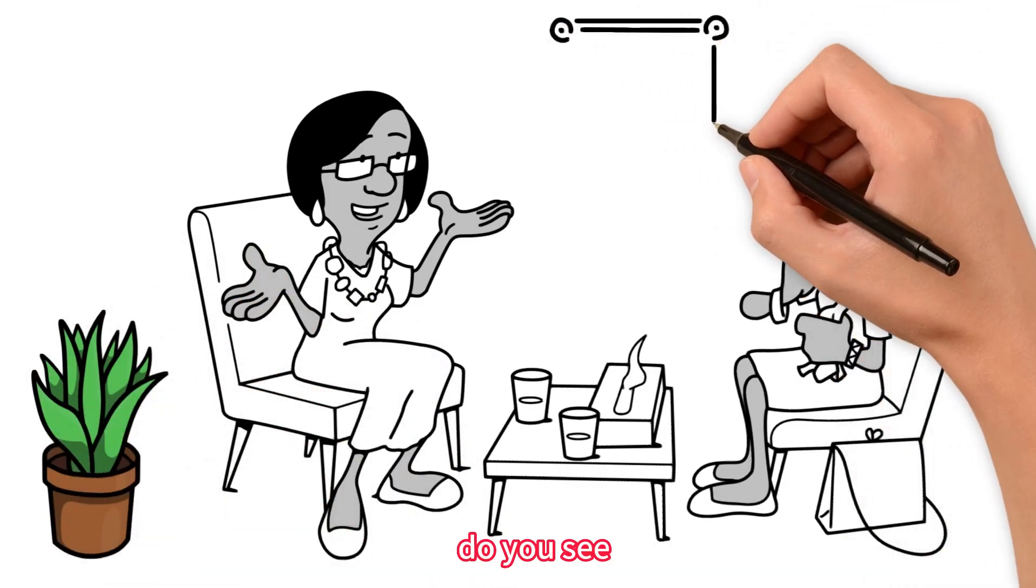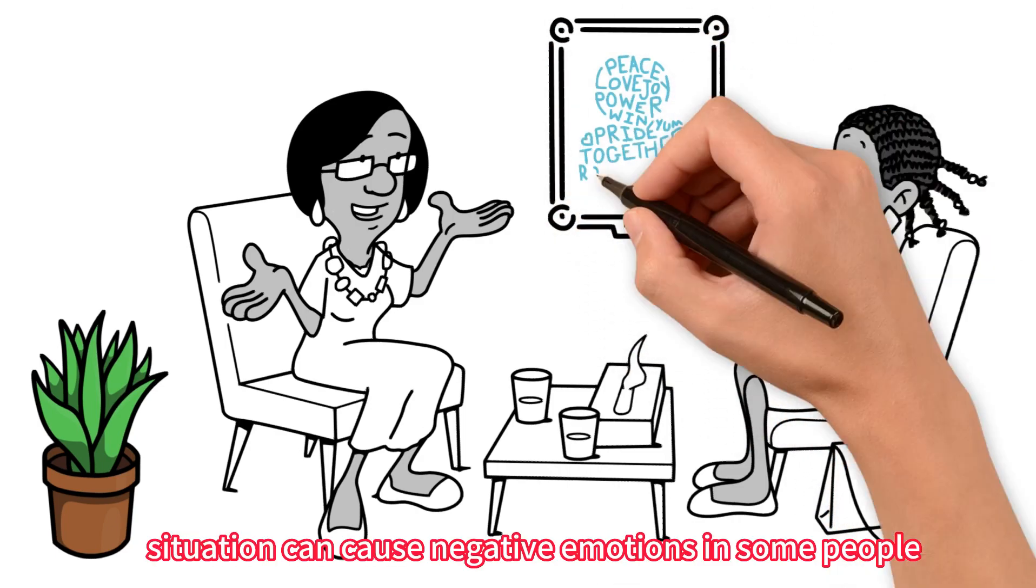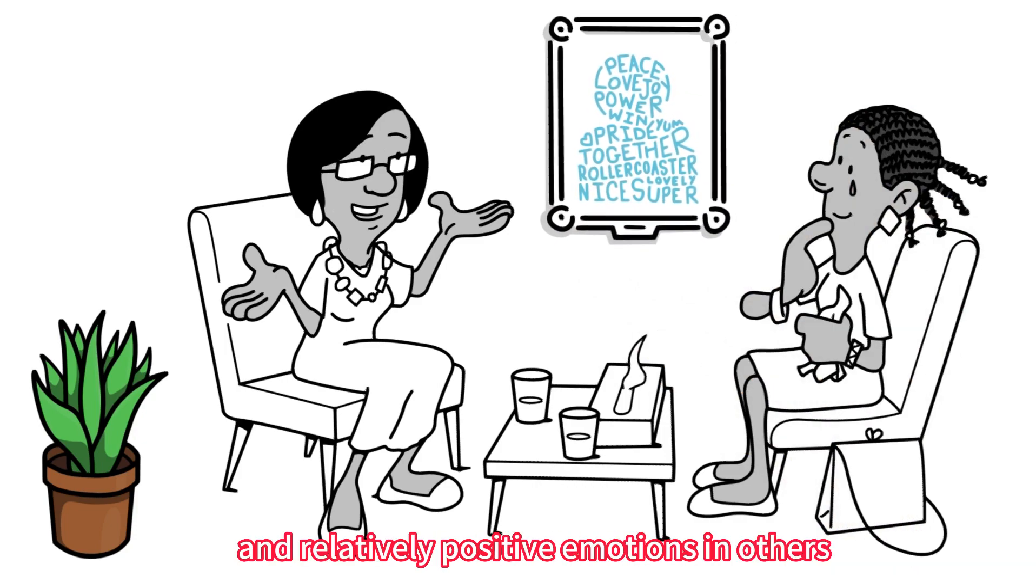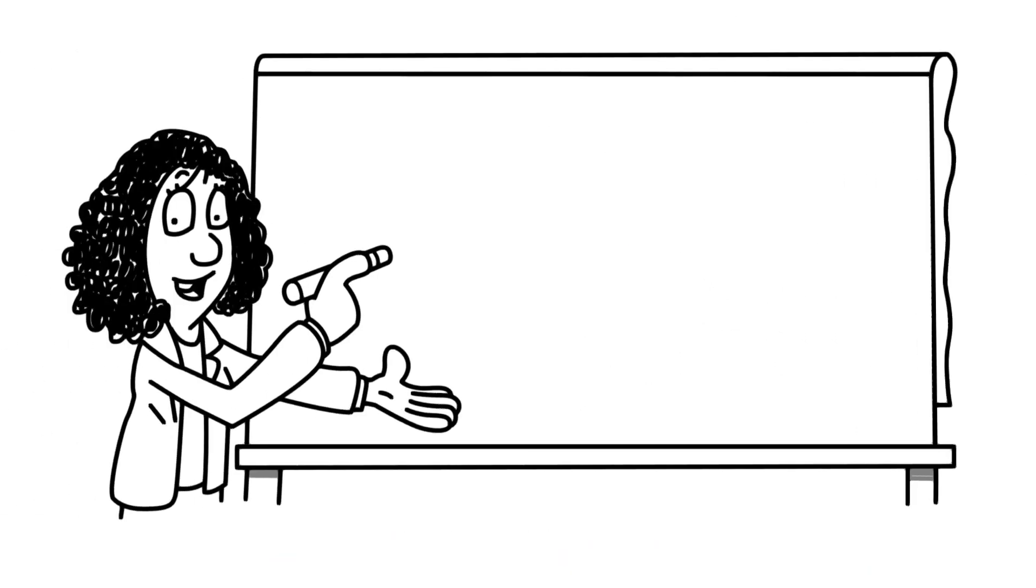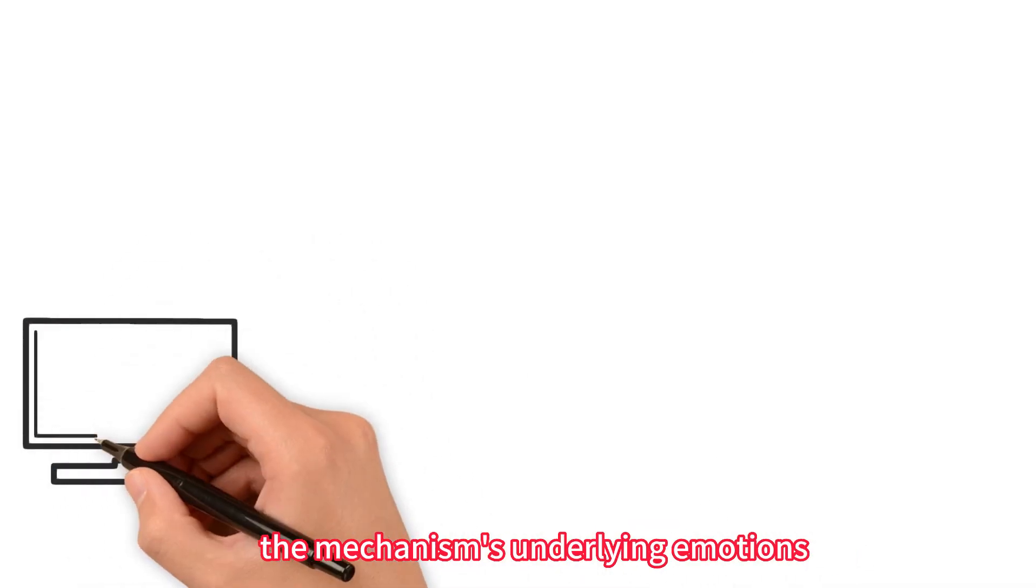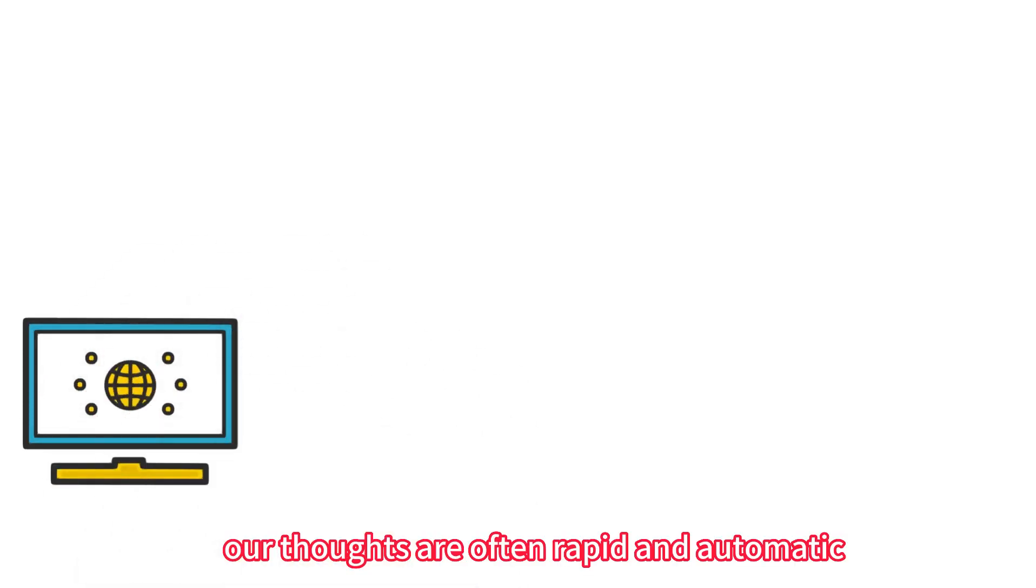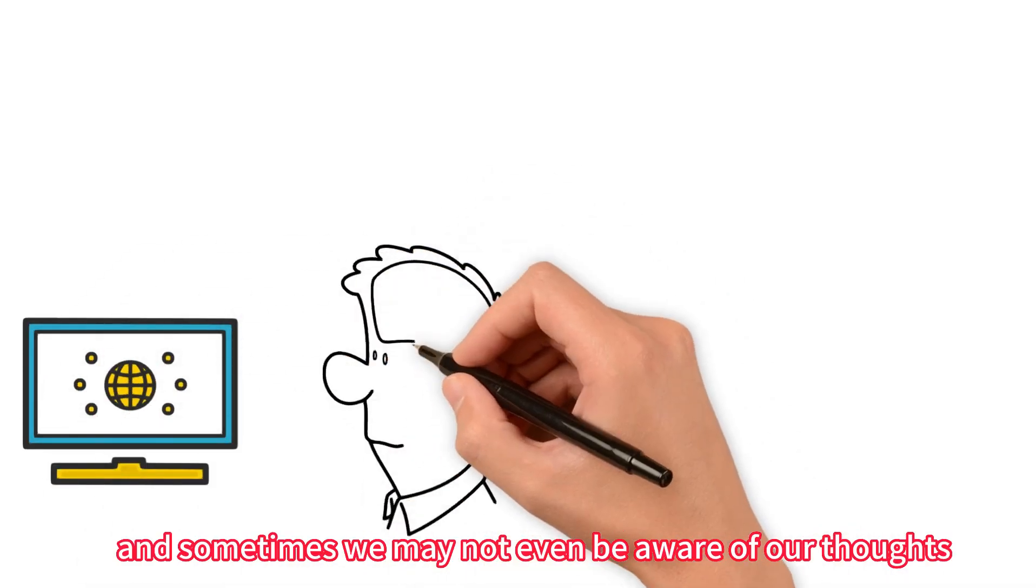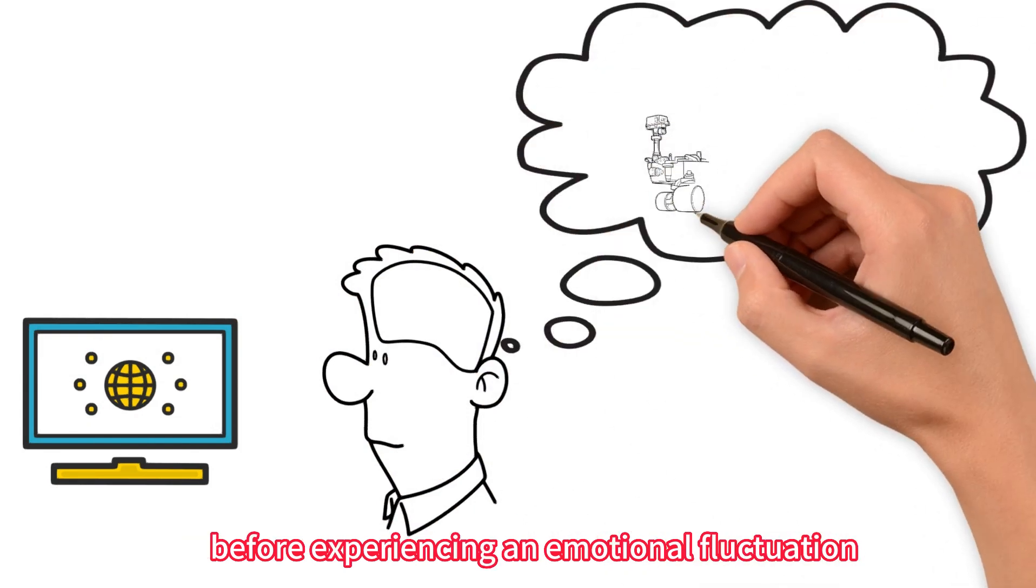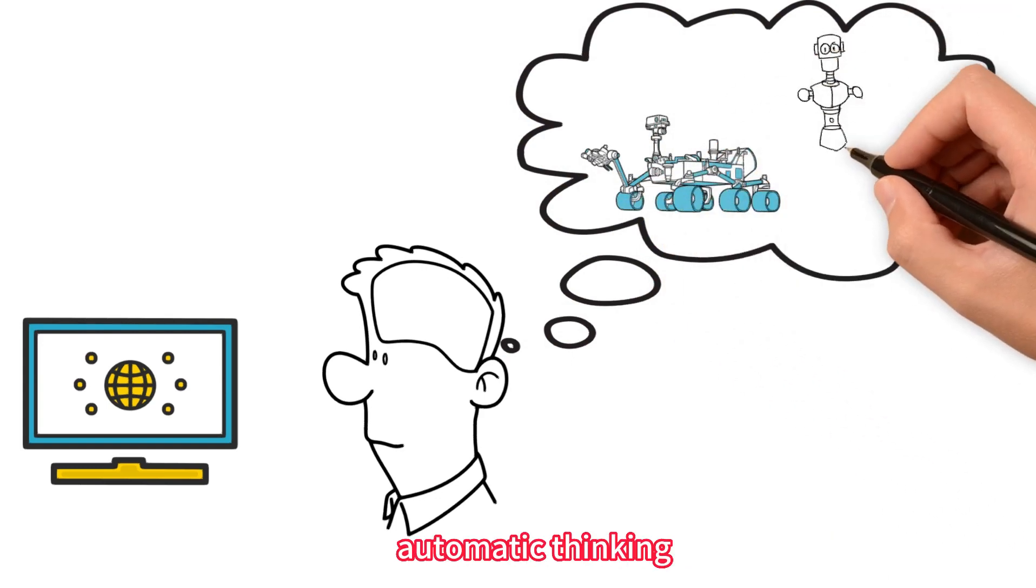Do you see? These are our emotions. The same situation can cause negative emotions in some people, no feelings in others, and relatively positive emotions in others. From the perspective of cognitive psychology, the mechanisms underlying emotions are a set of automated thinking processes. Our thoughts are often rapid and automatic, and sometimes we may not even be aware of our thoughts before experiencing an emotional fluctuation. These rapidly running thoughts are referred to as irrational automatic thinking.